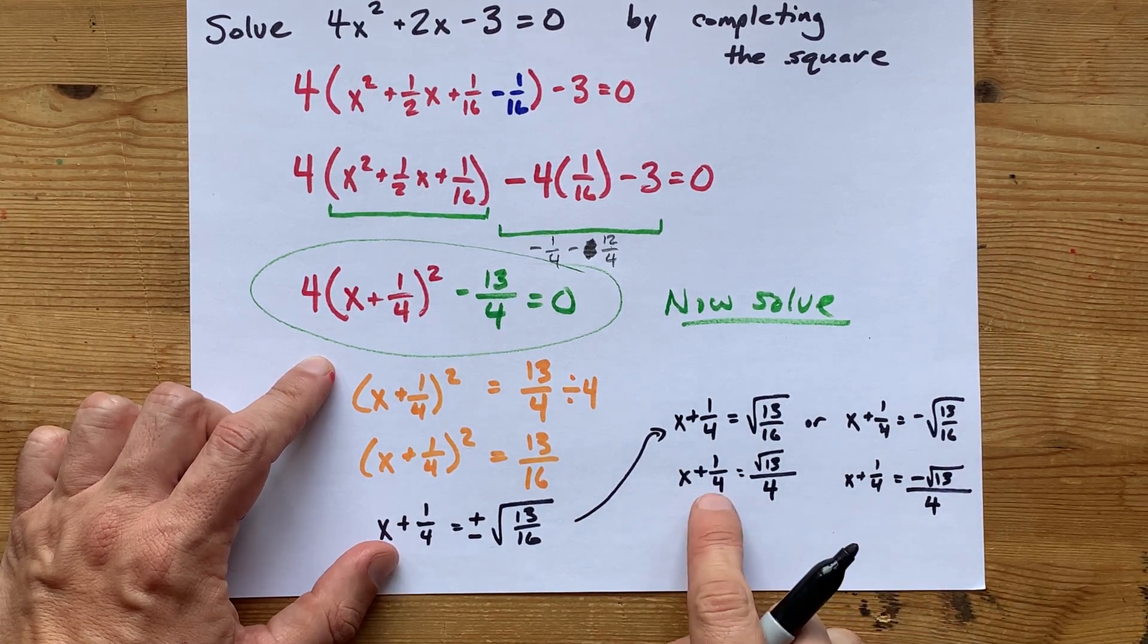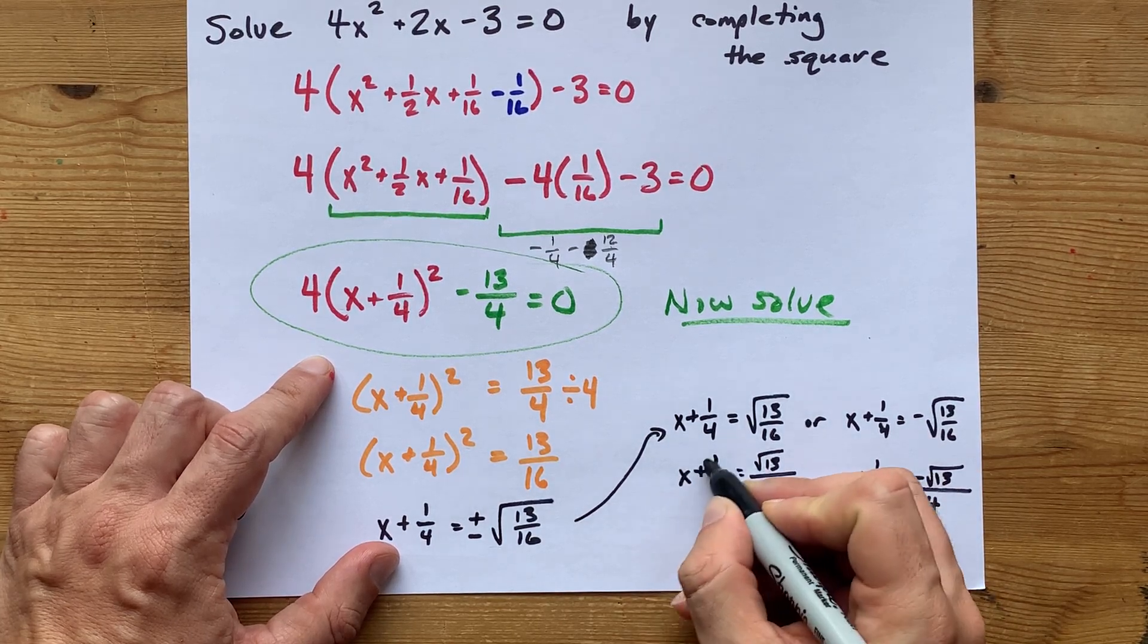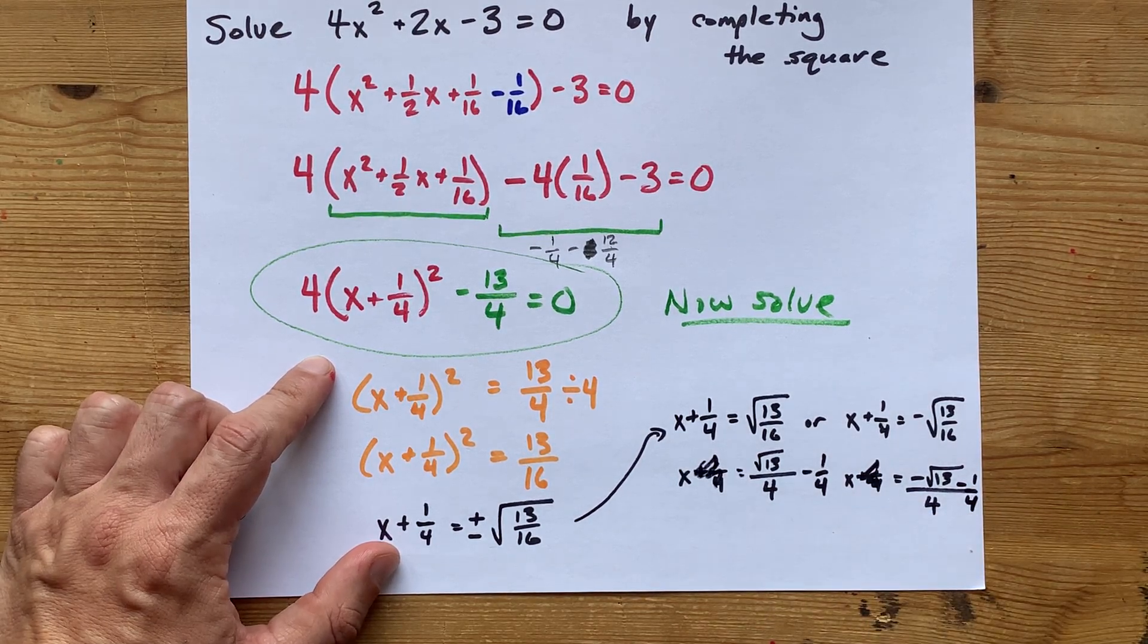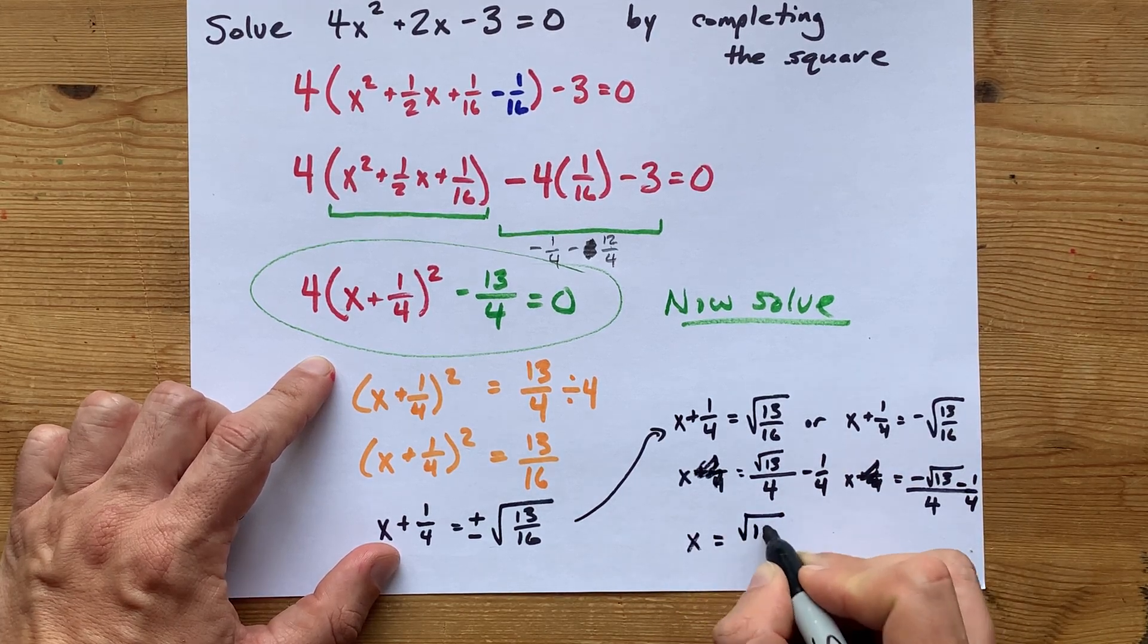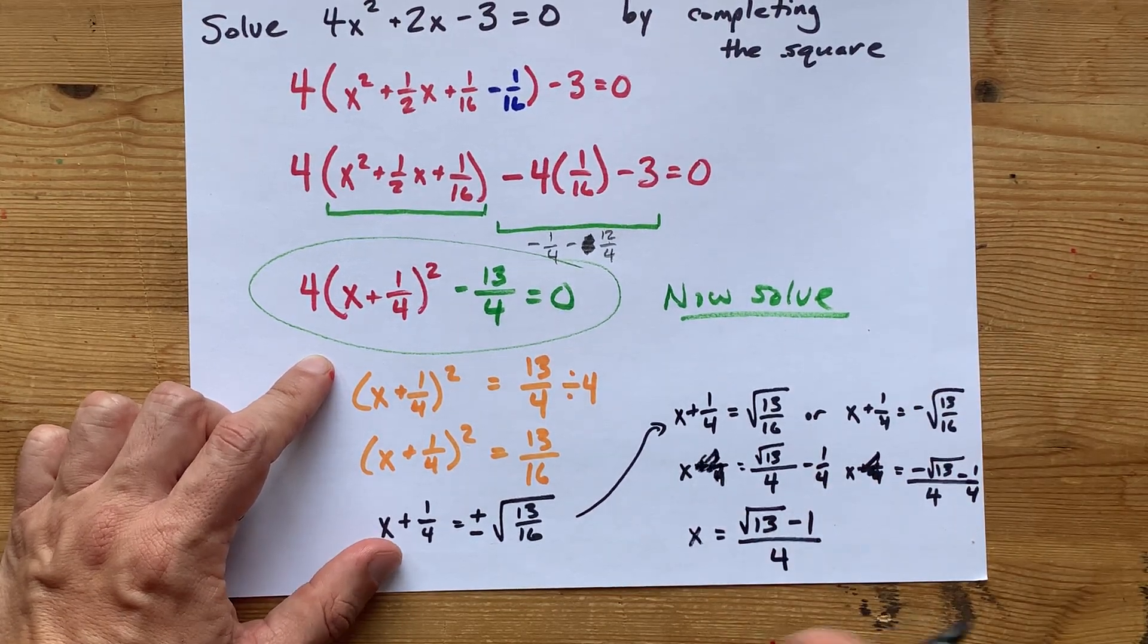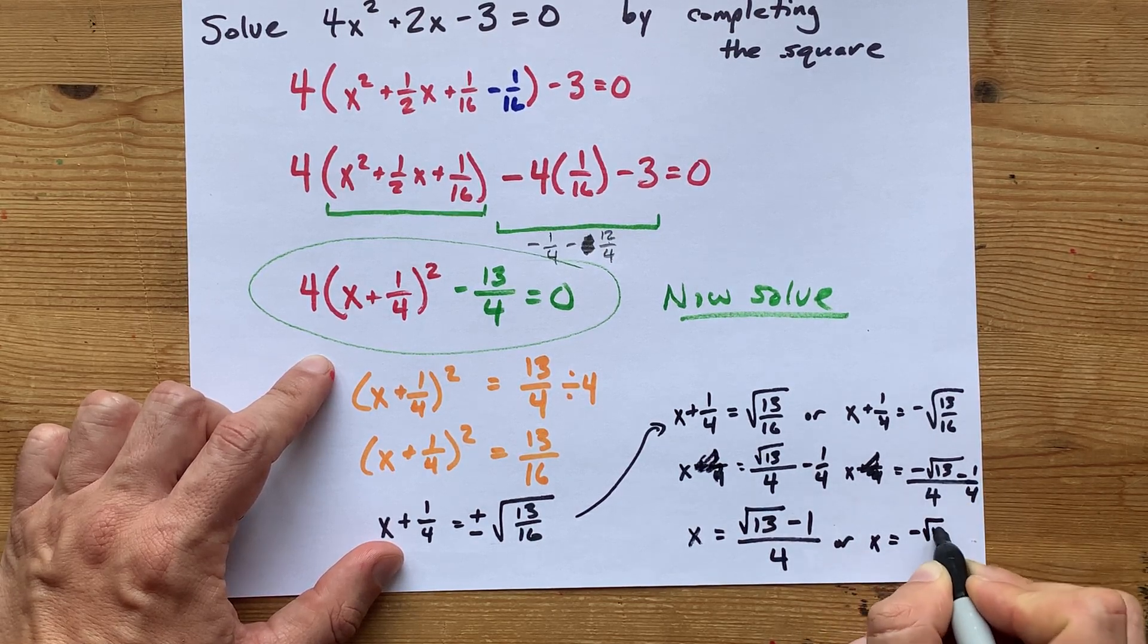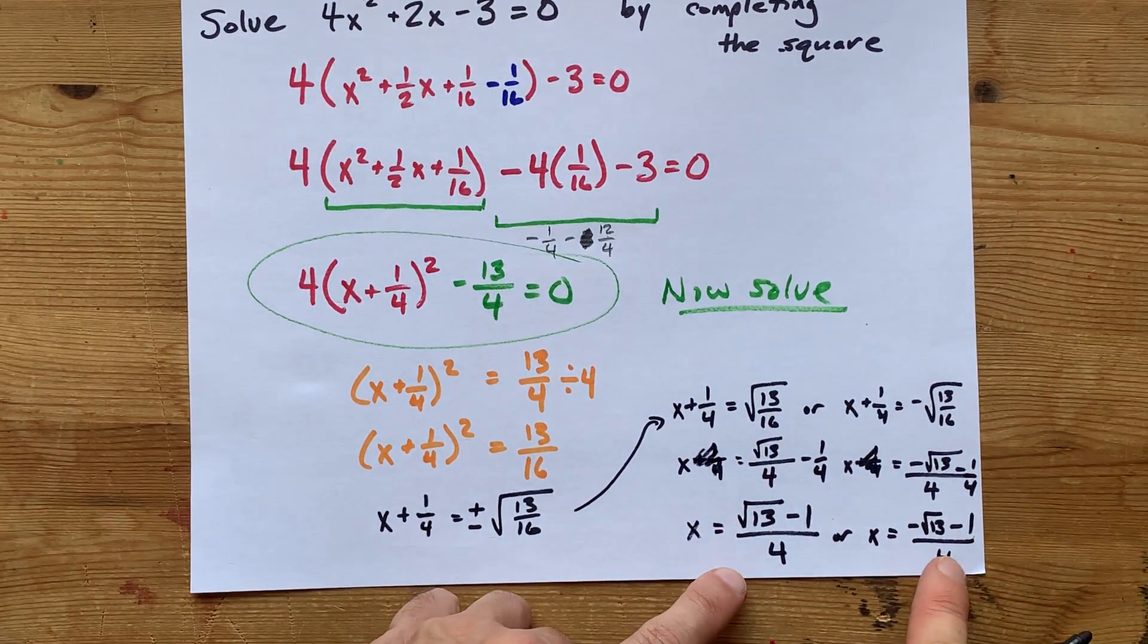And now, I have to undo this adding a quarter on both of these equations. If I do that, it becomes subtraction. I'm going to do that on both sides here, take some liberties with my notation. One of these answers ends up being root 13 minus 1 all over 4. Thank goodness, I already had a common denominator. Or, X could be negative root 13 minus 1 all over 4. These are my two solutions.